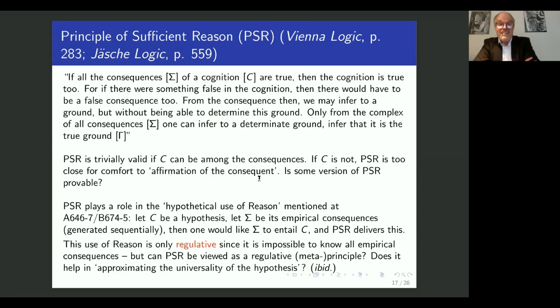Well, the first remark to be made is that from a logical point of view, but then in the style of Carnap, so without applying a principle of charity, the principle of sufficient reason is trivially valid if the cognition C can be among the consequences. Right, then the set of all consequences, the sigma contains C, C will be true given all the consequences.